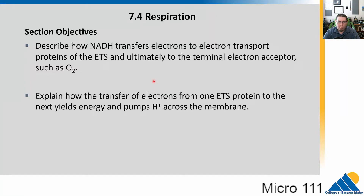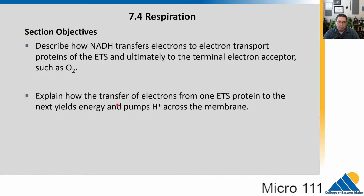In 7.4 we're going to talk about how we're going to use that energy in respiration. We'll talk about NADH transferring electrons to what's called the electron transport chain or system, ETS. Ultimately oxygen is going to be the last part that's going to get those electrons. Once that's done, we're going to see how we generate energy by using what's called the hydrogen ion gradient, or the proton motive force.